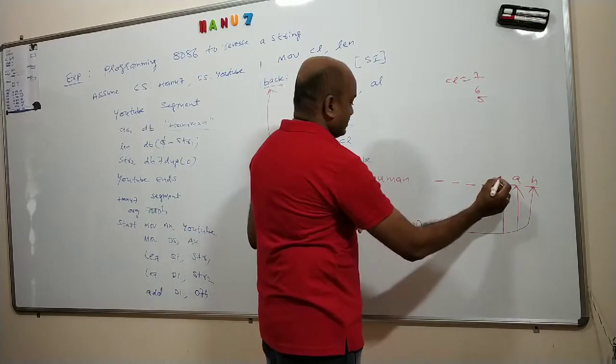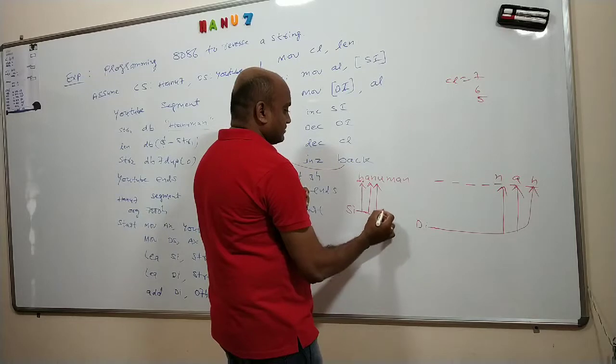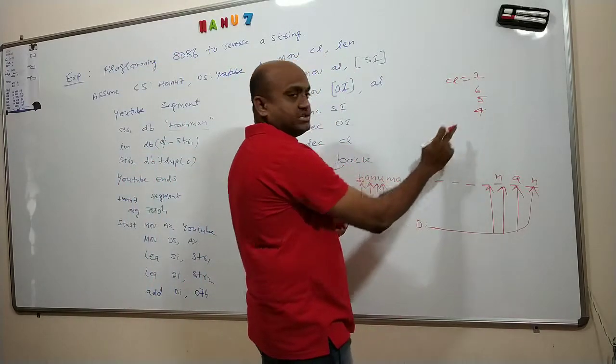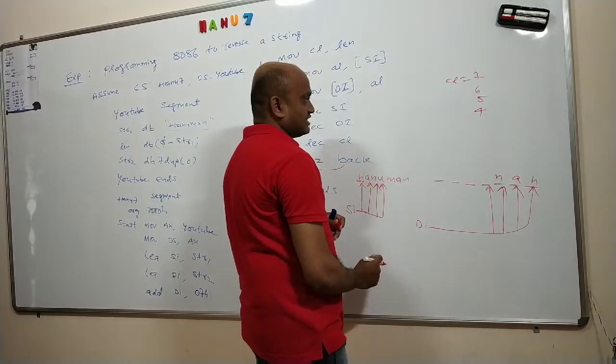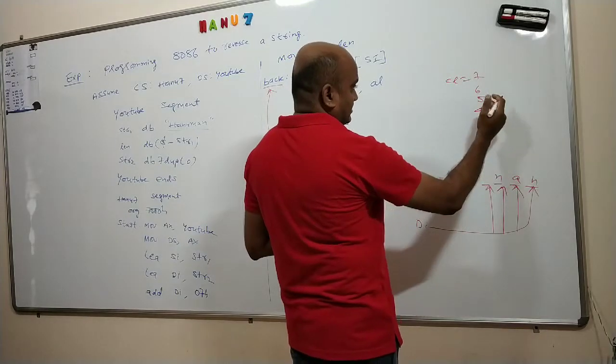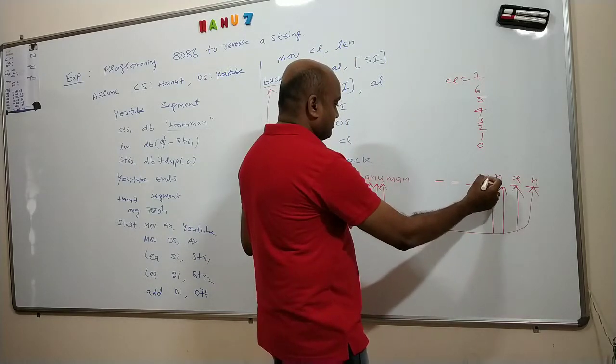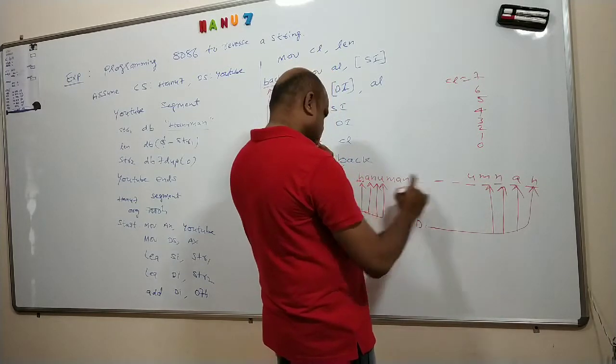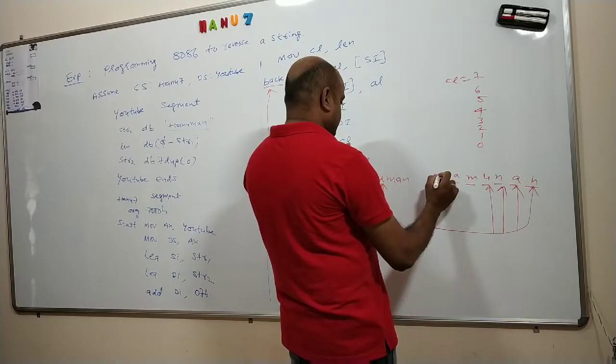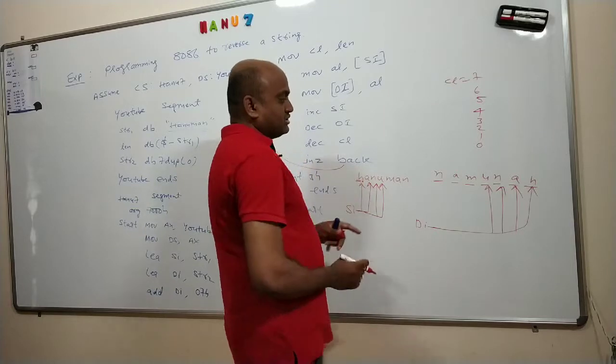And copy the next character. What is the next character? This time we have N. N is copied there. Again increment SI, decrement DI, decrement CL. Is it zero? No, it will go back. Then it will copy the next character. So this will become 3, 2, 1, then it will become zero. So for each time we are copying character by character. When all the characters complete, after N we will get M here, then U, then A, U we will get. Like this, N A M U N A H, so this will happen.